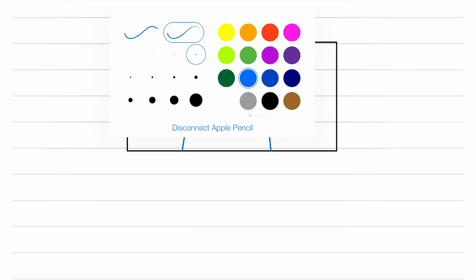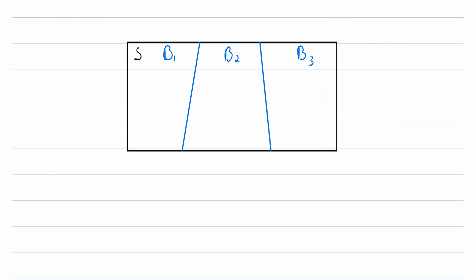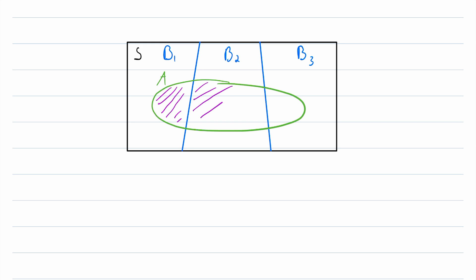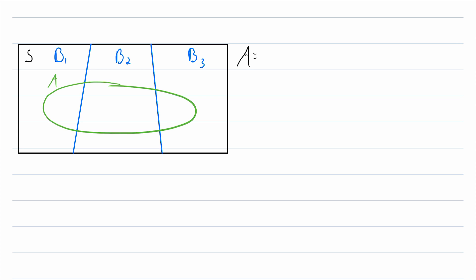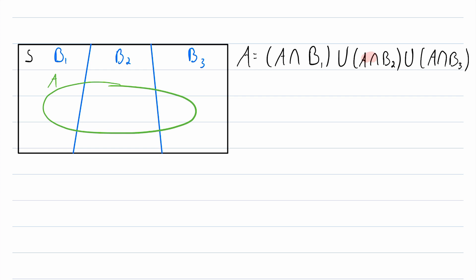This is the sort of situation where we can use the law of total probability. We know that any event in this sample space — let's call this event A — is made up entirely of parts that are in B1, parts that are in B2, and parts that are in B3. More formally, we can write that A is equal to (A intersect B1) union (A intersect B2) union (A intersect B3). If we put together all the pieces of A that are in B1, B2, and B3, we get all of A.